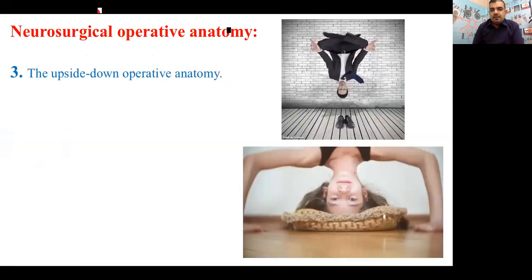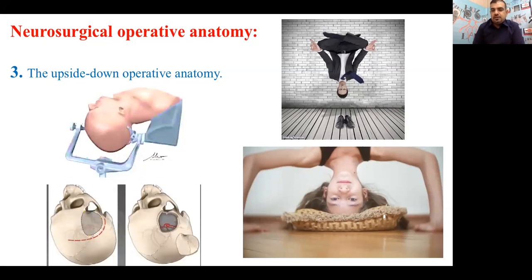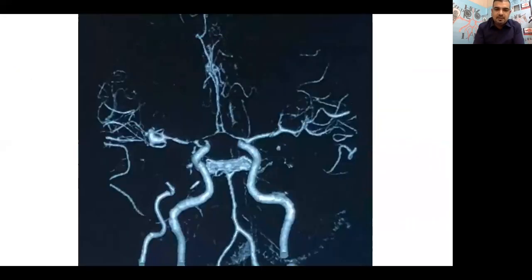Topic three is the upside-down operative anatomy, and I think it will be interesting. When you become a neurosurgeon and go to the operating room after studying neuroanatomy, you must flip the anatomy upside down. Why? Because you position the patient so that the skull is above and the brain is below — the opposite of books. All books show the brain above and the skull below. In surgery, it will be inverted due to patient positioning. This is really challenging and needs practice.